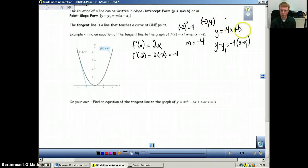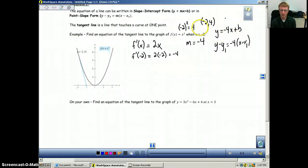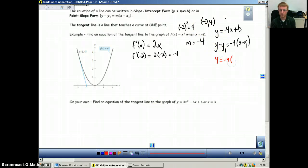We can either plug it into our top equation to figure out what our b is. So plug in negative 2 for x, plug in 4 for y. So we'll do both of these. So 4 equals negative 4 times negative 2 plus b. So we have 4 equals positive 8 plus b. Therefore, b is equal to negative 4.